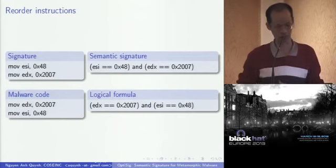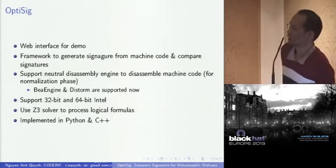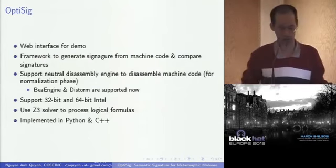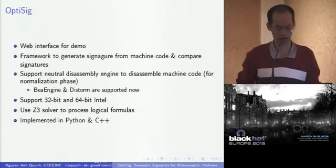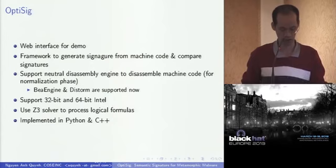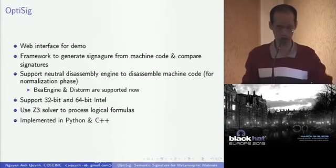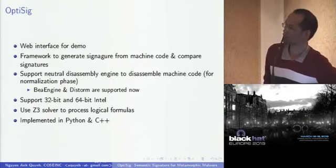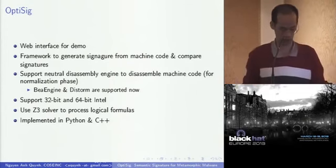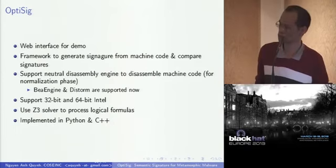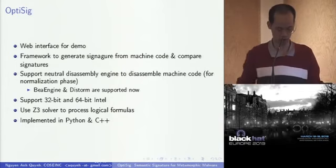We have implemented OPTISIG with a web interface for demo and a framework to generate signatures from machine code and compare them. OPTISIG currently supports 32-bit and 64-bit Intel platform. We use Z3 solver to process the logical formulas. The project was implemented in Python and C++ and takes about 5,000 lines of code.